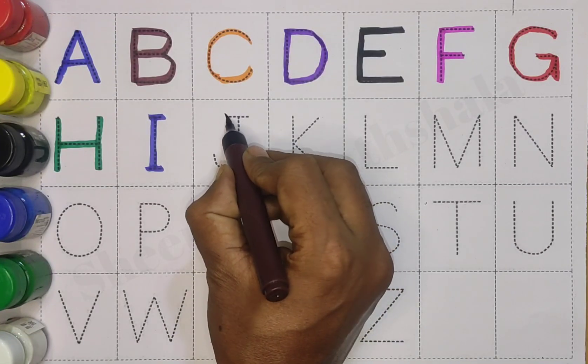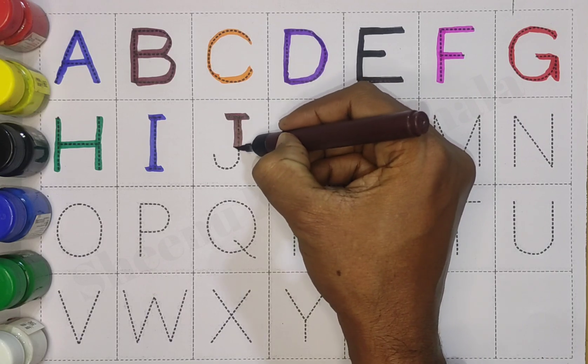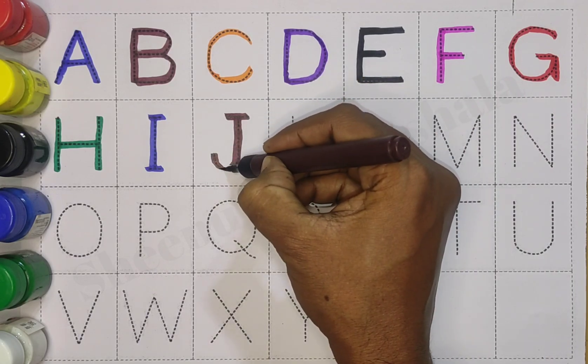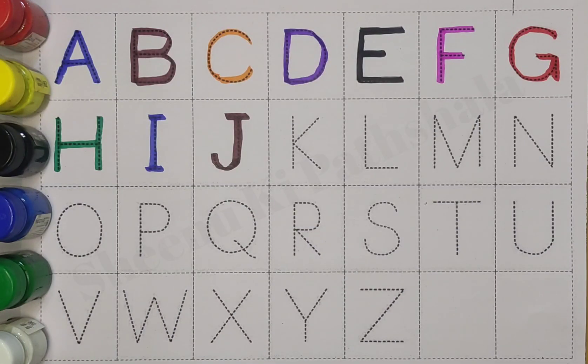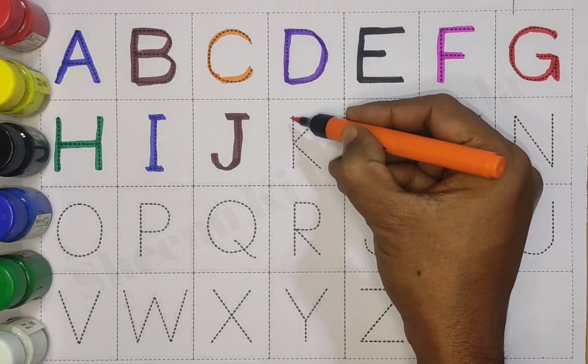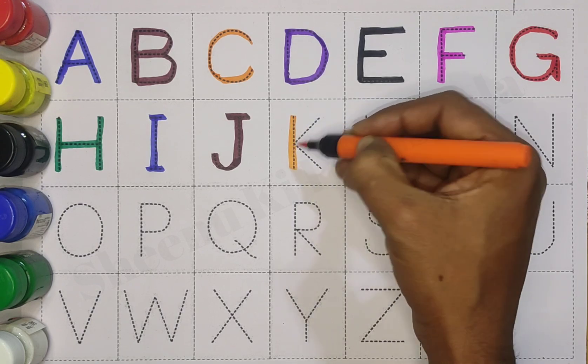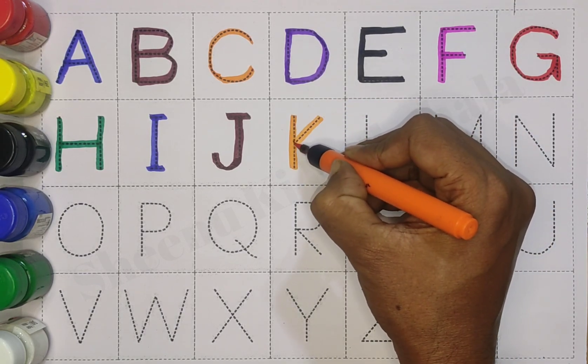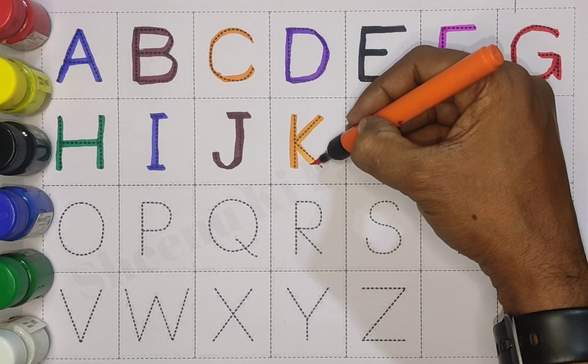Brown color. J for jug. Orange color. K for kite.